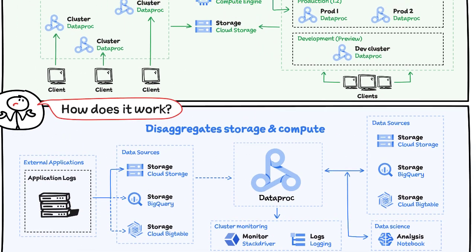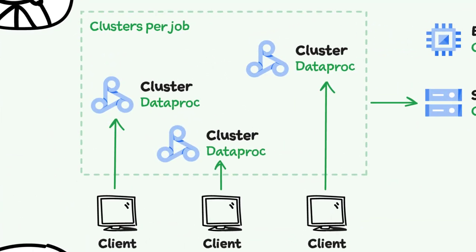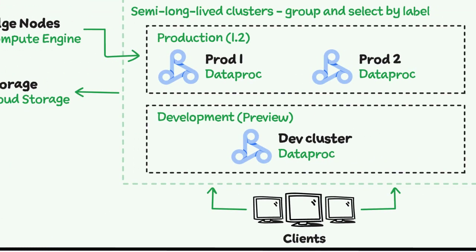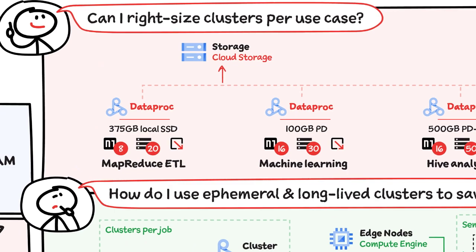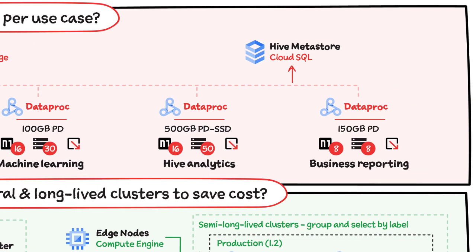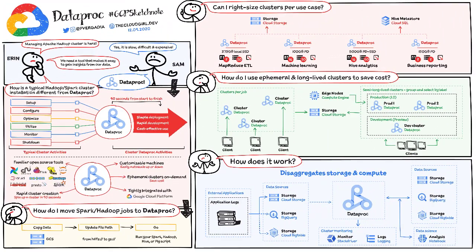Since storage is separate, for a long-lived cluster, you could have one cluster per job. But to save cost, you could also use ephemeral clusters that are grouped and selected by labels. You can also use the right amount of memory, CPU, and disk to fit the needs of your application.